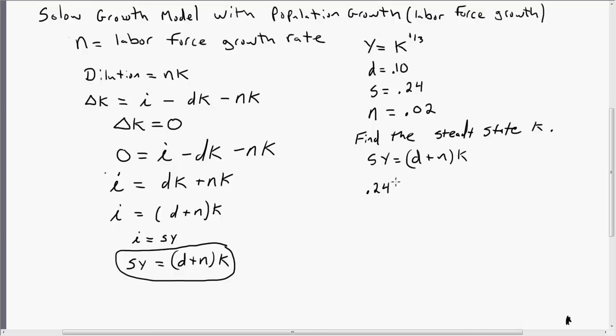So S is 0.24. Y is K to the one-third. And that all equals D, which is 0.1, plus the labor force growth rate, which is 0.02, times K. We're going to solve this for K, and we have the steady state equilibrium capital labor ratio.